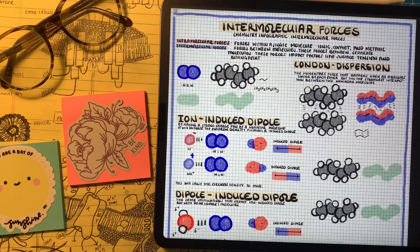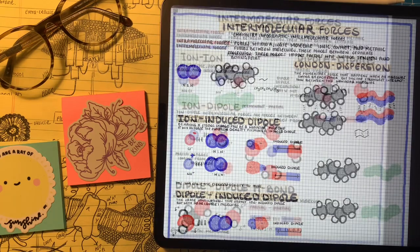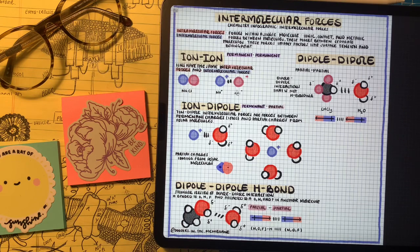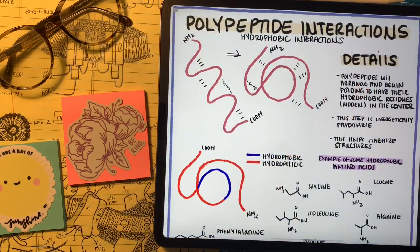Intermolecular forces help us explain boiling points, melting points, cohesive and adhesive forces, and even viscosity. We've talked about enough details to help explain the properties of amino acids when we discuss polypeptide chains and the building blocks for proteins.